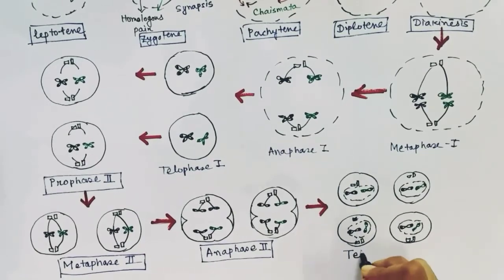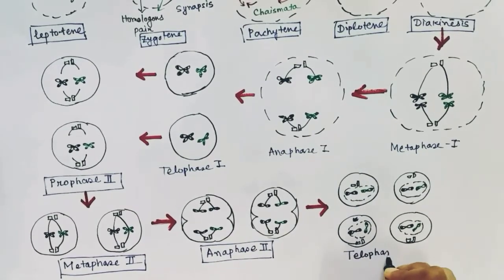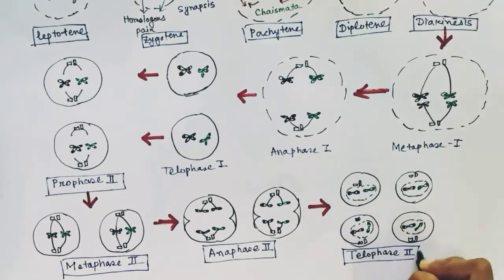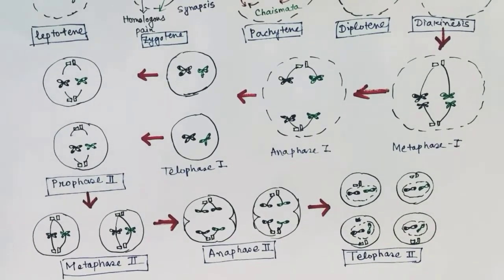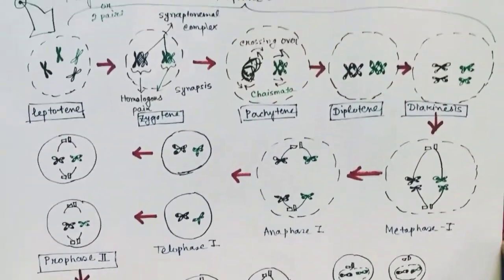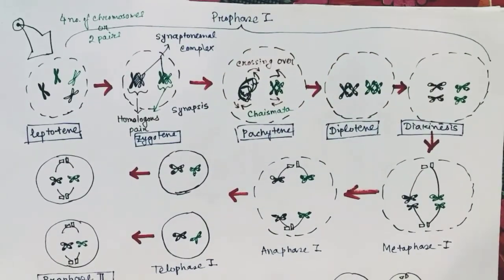This is telophase II — the last stage of meiosis. Four gametes are now formed from one parent cell.